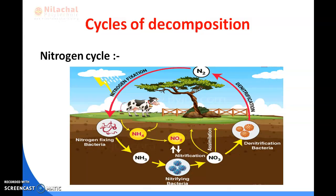Another example of decomposition is the nitrogen cycle. Nitrogenous organic matter gets oxidized to ammonia, then to nitrites, and finally to nitrates, which when consumed by plants through photosynthesis form plant proteins. The plant proteins when consumed by animals form animal proteins. The waste produced by animals and their dead bodies will again form nitrogenous organic matter, thus completing the nitrogen cycle.